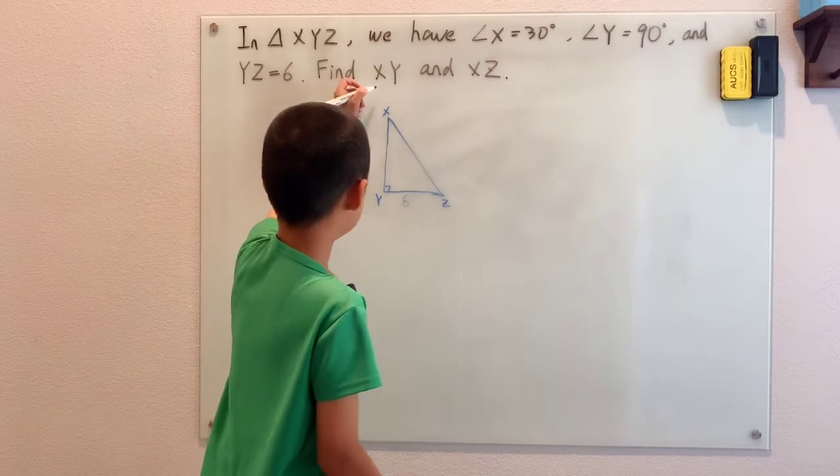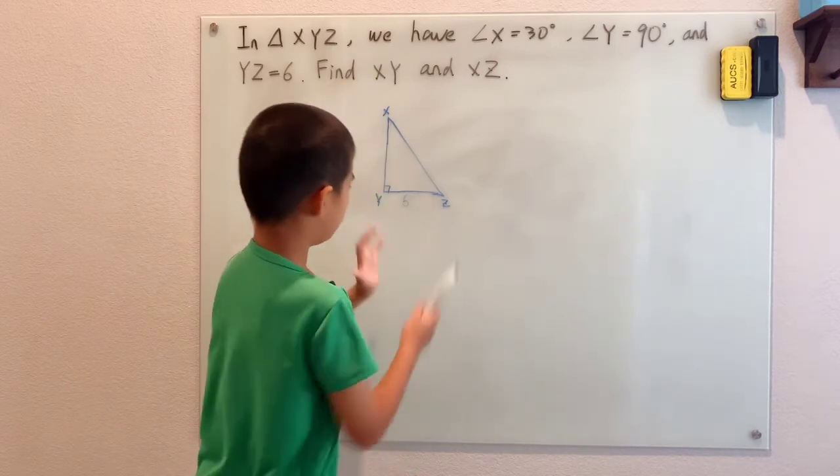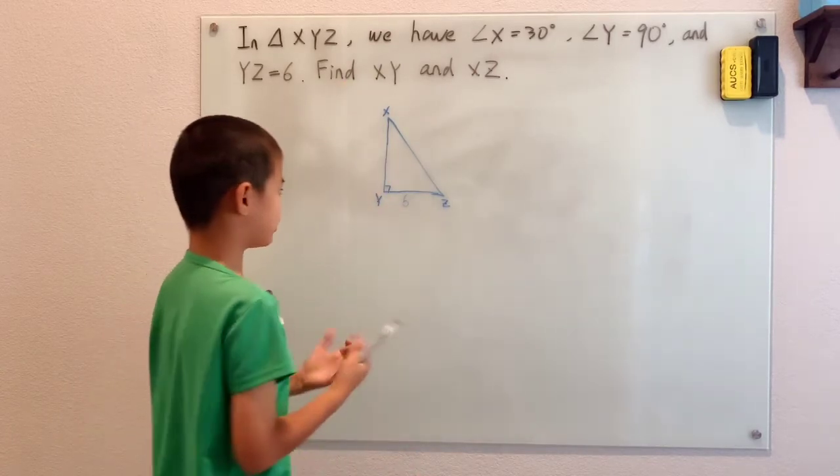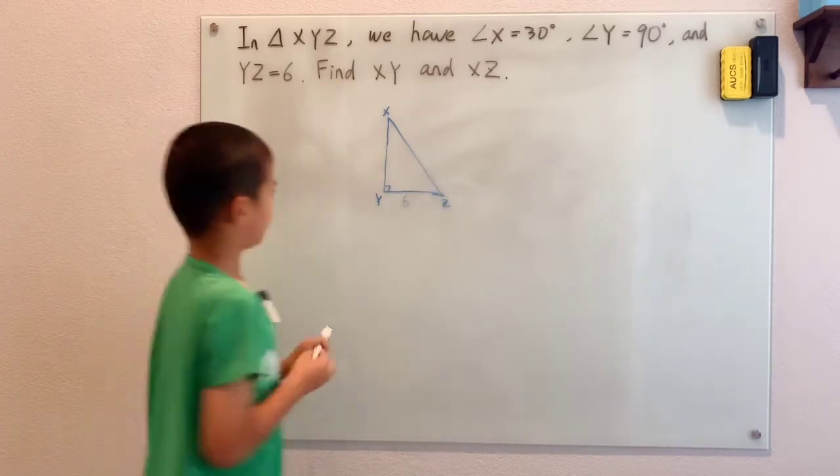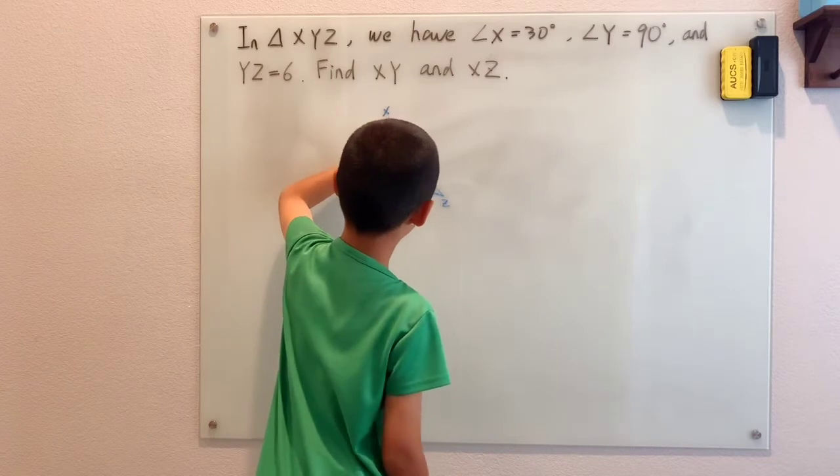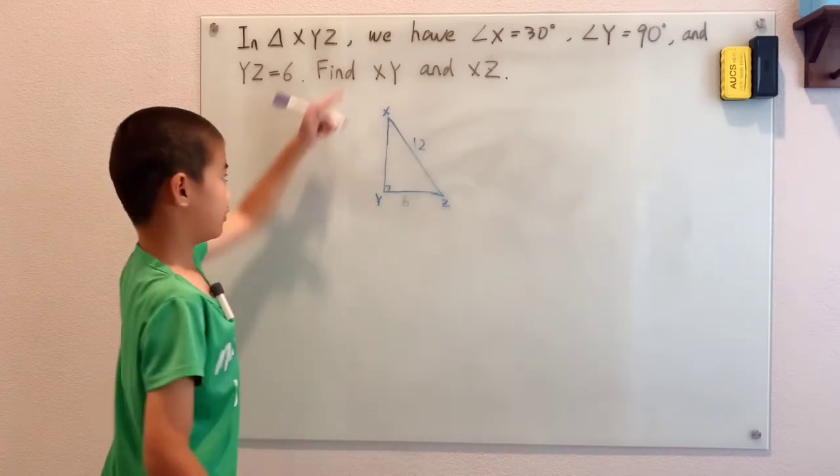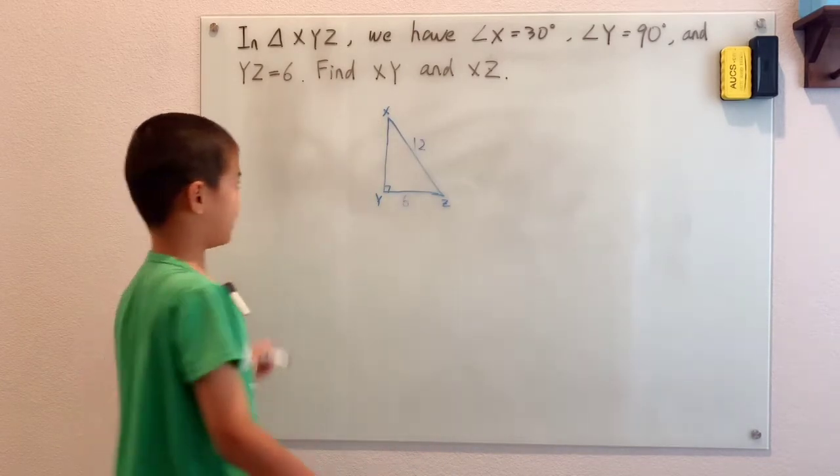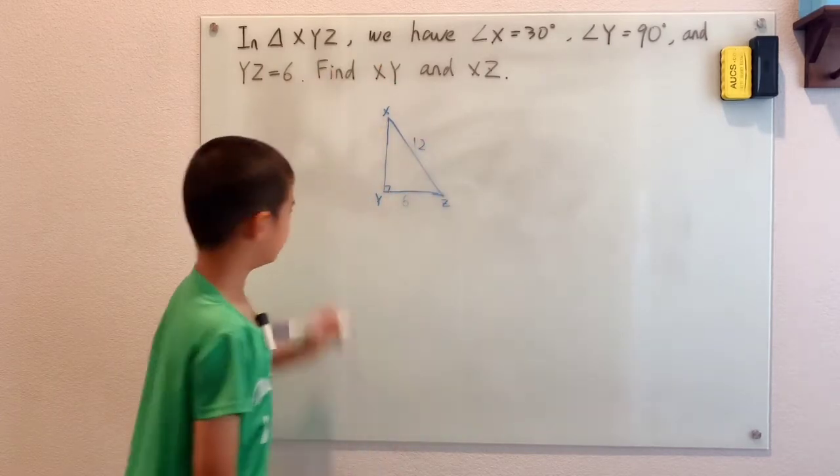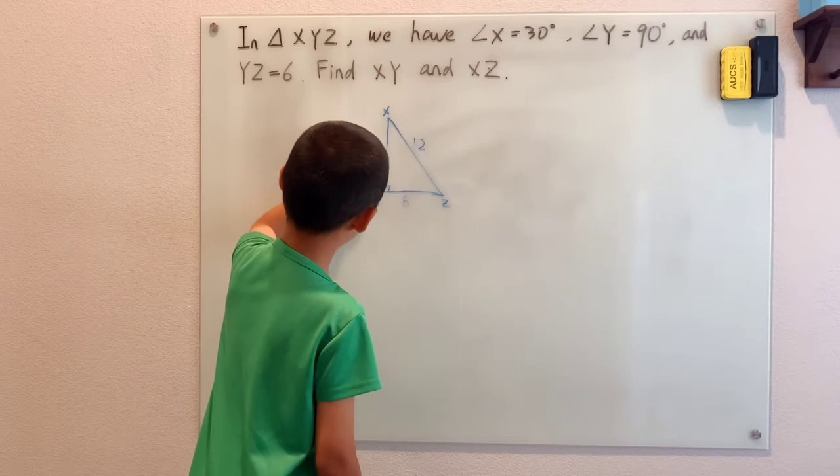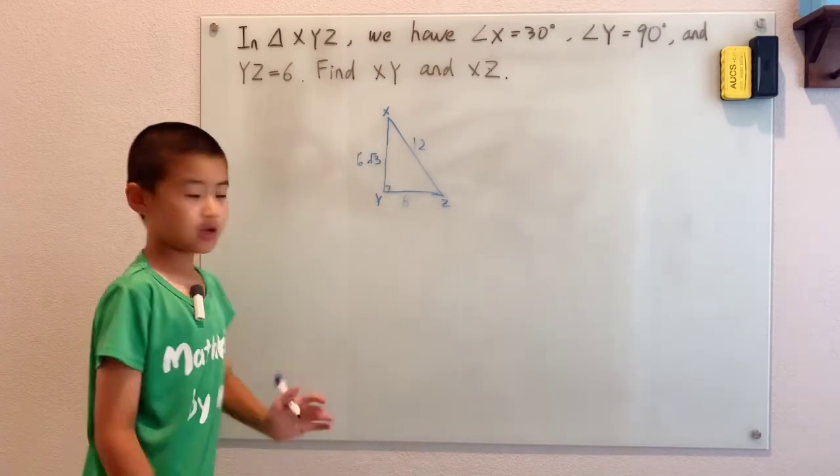So for XY and XZ, well, for a 30-60-90 triangle, the hypotenuse related to the short leg is just hypotenuse equals double the short leg. So XZ is 12, and XY is always short leg times root 3, which is 6 times root 3.